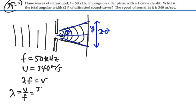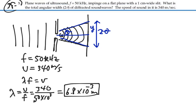That'll be 340 meters per second divided by 50 kilohertz. And what is that? 340 divided by 50,000. 6.8 times 10 to the minus 3 meters. So that's the wavelength of the sound that we're talking about.